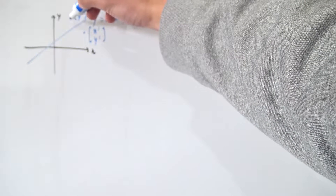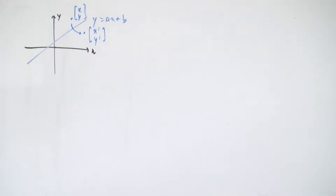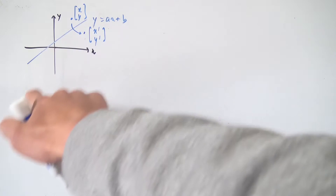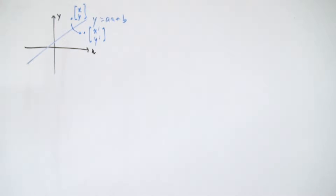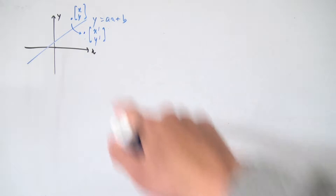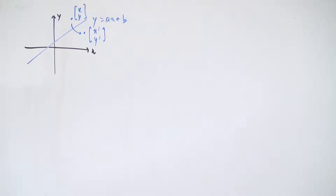So we want to reflect this point across the line. This is a bit tricky because we're not only reflecting in a line that passes through the origin — it's also been translated up by some constant b. So we have to think about how we can simplify this problem a little bit.